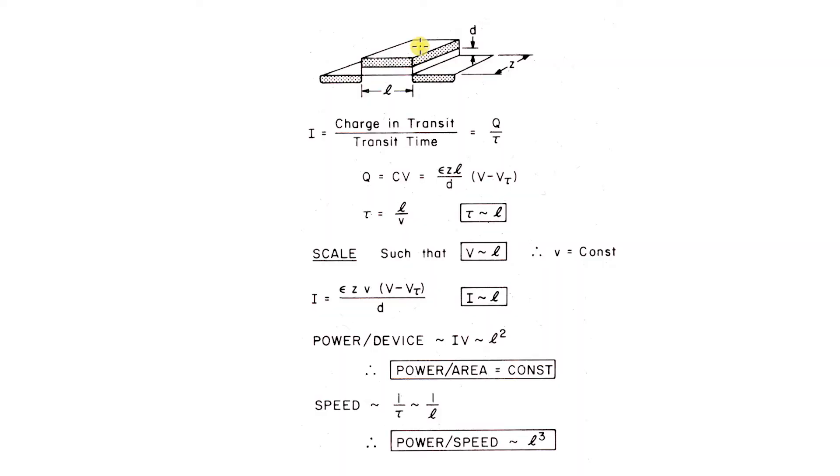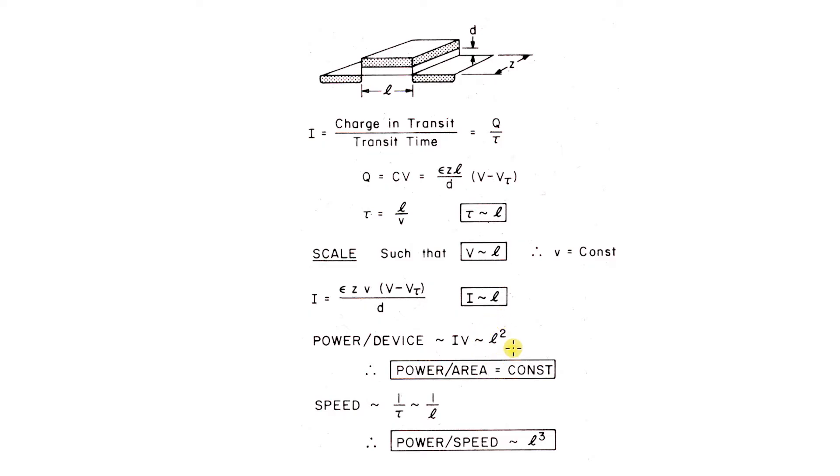Now how are we going to do this? We're going to shrink all the dimensions. But if you do that, then the electric field — which is the voltage you put on the gate divided by the thickness — gets higher than the material can stand. So supposing we scale the voltage down exactly with the dimensions. Now that keeps all the electric fields more or less the same, so it's physics we understand, and we're not changing too many things at once. The power per device goes like the square, so if you scale it down by a factor of 10, the power will go down by a factor of 100.